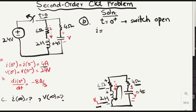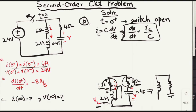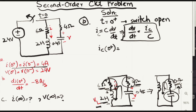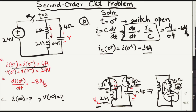To find dV/dt, we use I_C equals C·dV/dt, so dV/dt equals I_C over C. Combining the two series resistors — 6 Ω and 4 Ω — gives 10 Ω. The capacitor current I_C equals the loop current I at 0 positive, which is 4 amperes. Substituting: dV/dt equals minus 4 A over 0.4 F, which equals minus 10 volts per second.